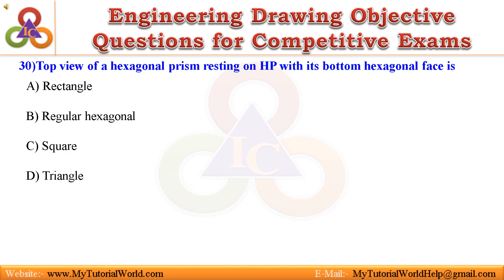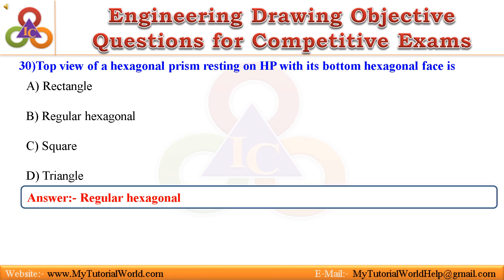Question 30. The top view of a hexagonal prism resting on HP with its bottom hexagonal face is: A. A rectangle, B. Regular hexagonal, C. Square, D. Triangle. Answer is Regular hexagonal.